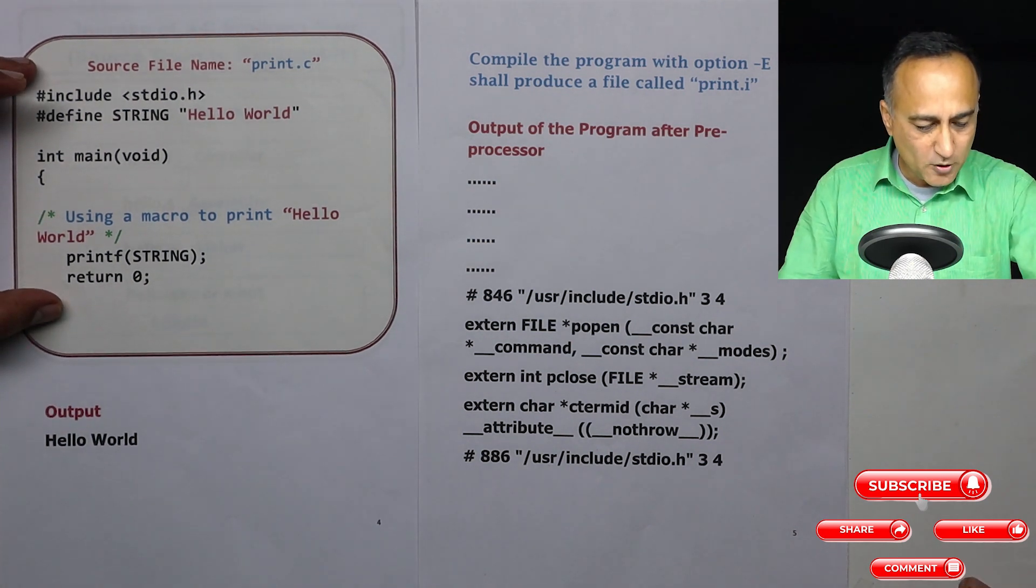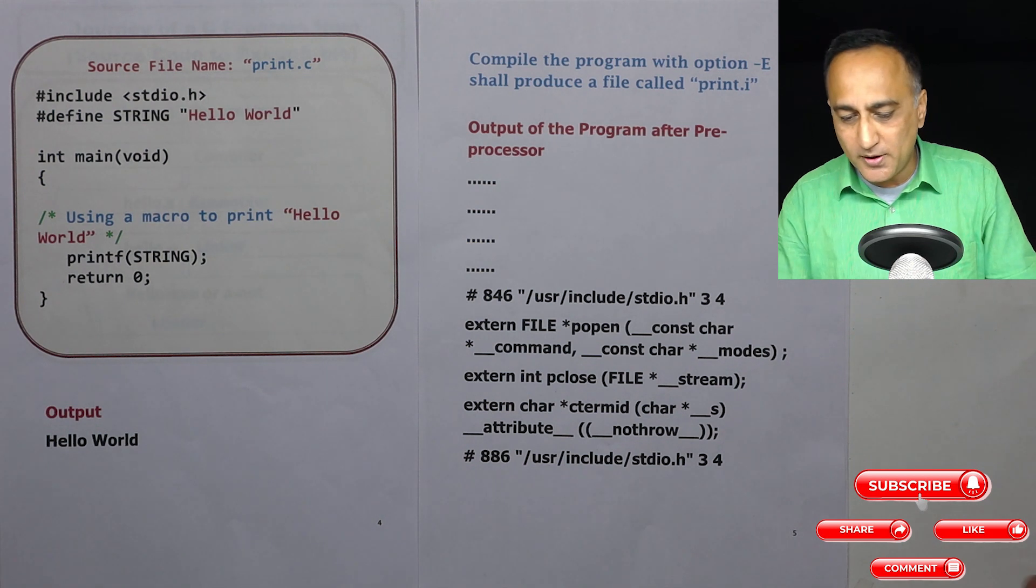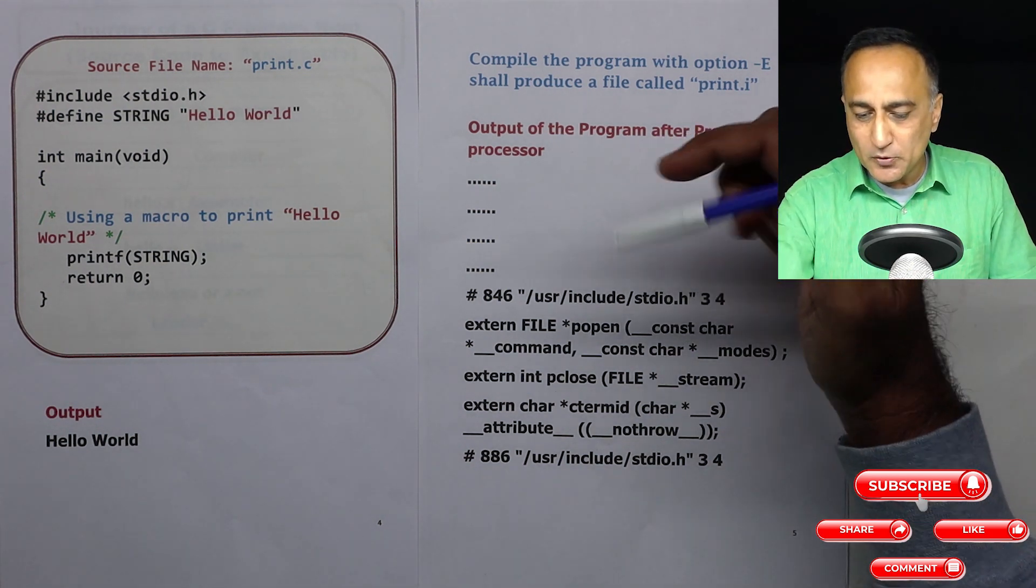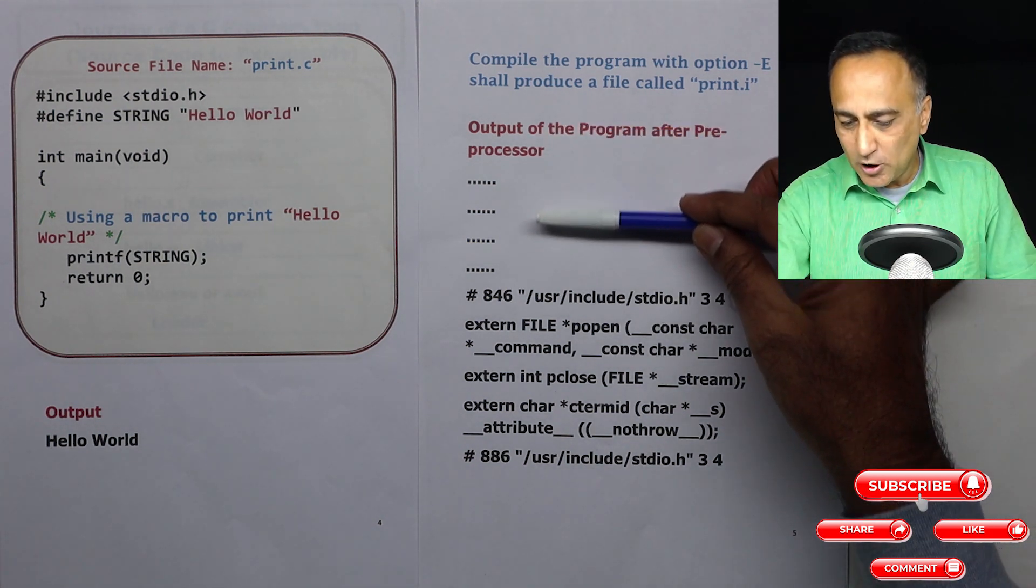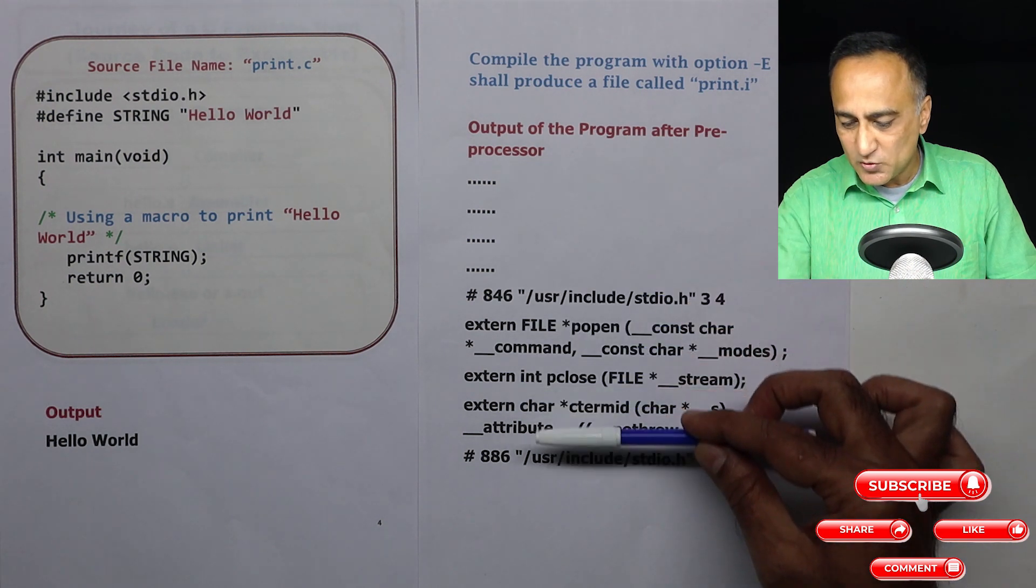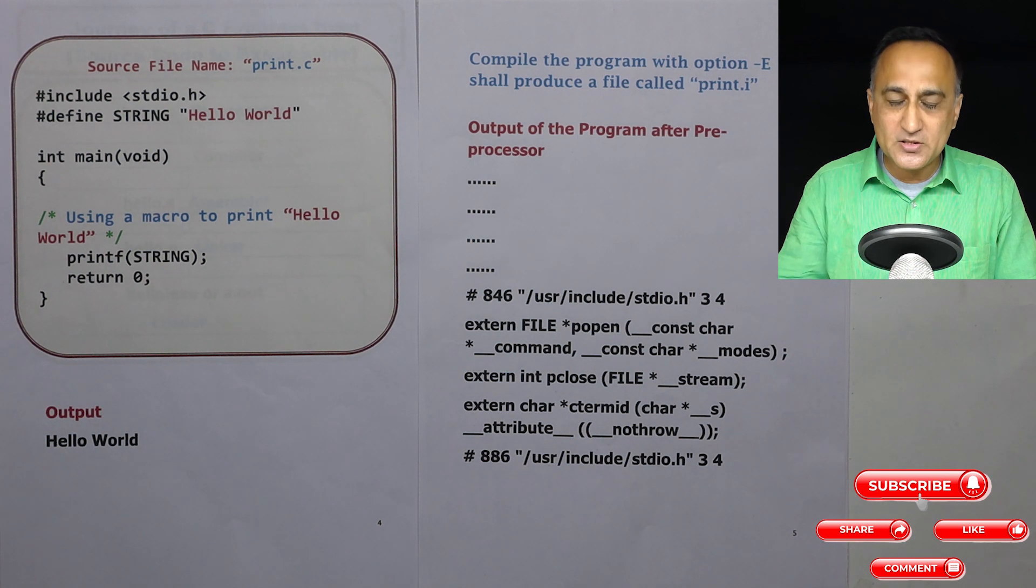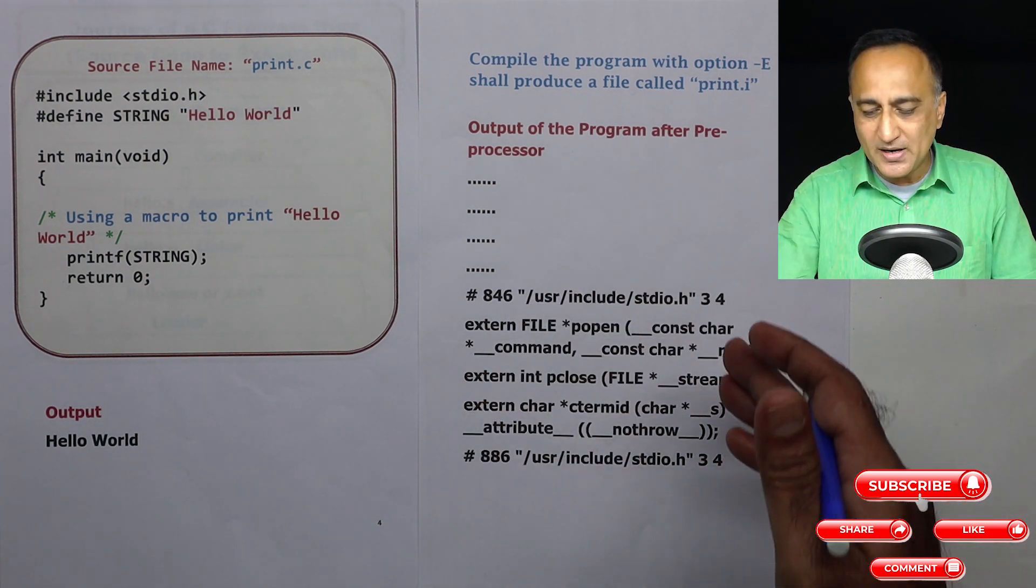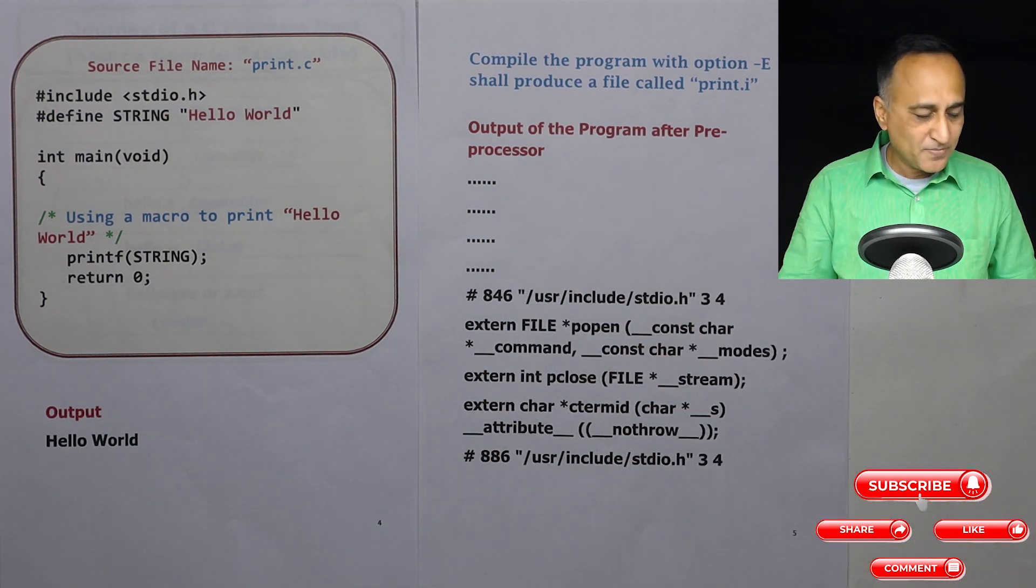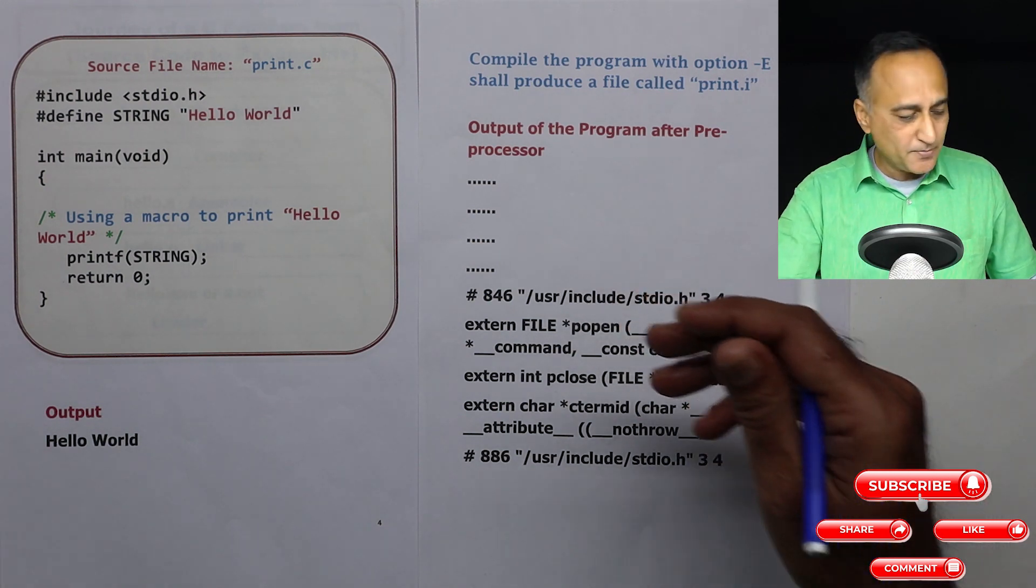Number three, wherever this word string occurs it is replaced with hello world and the output if you run this particular program on any of the machines you are going to get this output hello world. So since I have preprocessed it only, this is how the output of the preprocessor is going to look. A lot of this is not going to make sense at now at this position because we are just beginning C. As you commence your journey maybe over the next month or two all of these points will be clear what all these things mean.